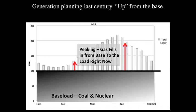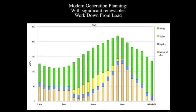This works great for power plants you can turn on and off, but you can't turn on and off the wind or solar. So you have to think differently. Instead of working from the base up, you have to work from the load down when you're talking about significant amounts of renewables. This picture shows in green wind, yellow solar, and blue hydro — for a mix of about 50% renewables.